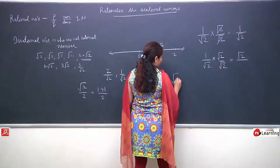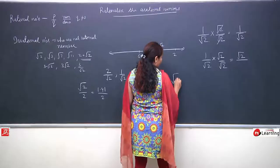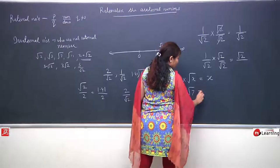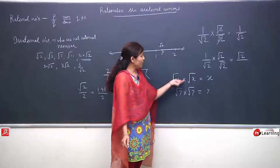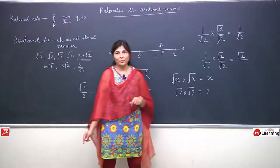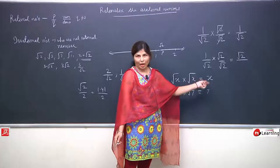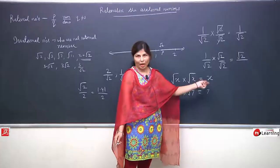Here we use a property: root x multiplied by root x is always equal to x. For example, root 7 multiplied by root 7 is always equal to 7. Wherever the same roots are multiplied, we replace them with x. So square root of x multiplied by square root of x is always equal to x. Root 5 into root 5 equals 5. Root 10 multiplied by root 10 equals 10, and so on.